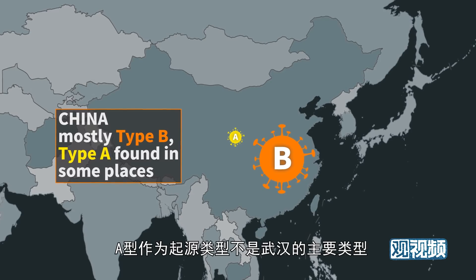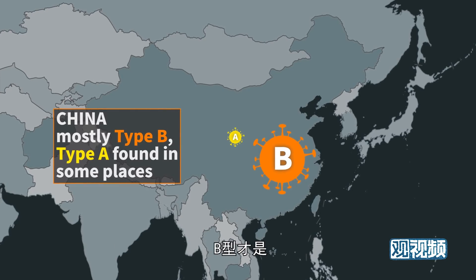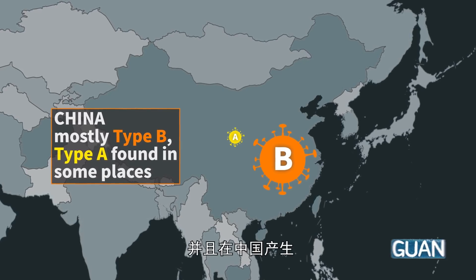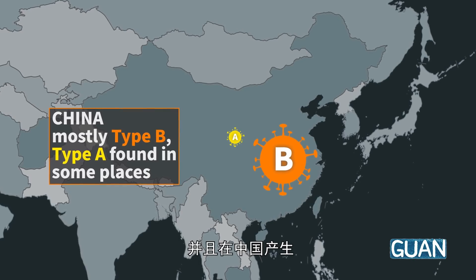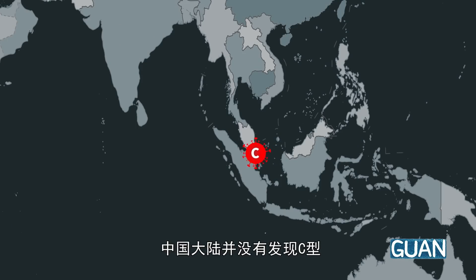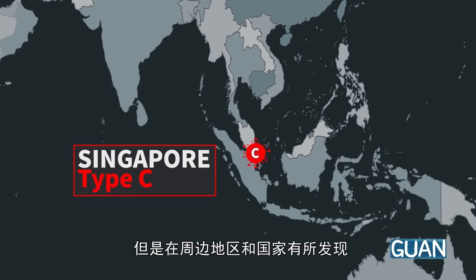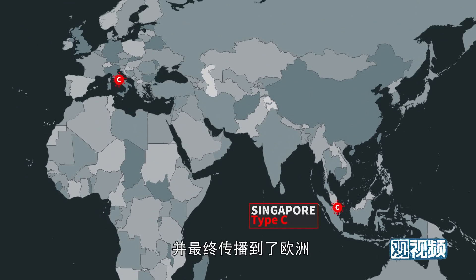The B type is the characteristic type for Wuhan and much of mainland China. The C type is found not so much in mainland China, but in surrounding territories and countries, and ultimately also arrived in Europe.